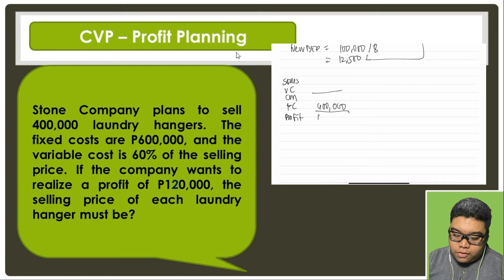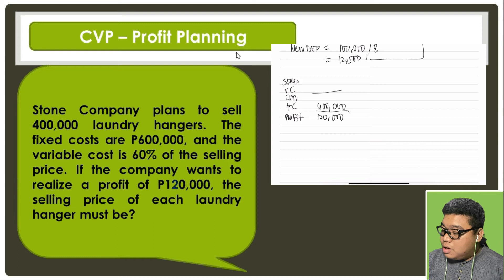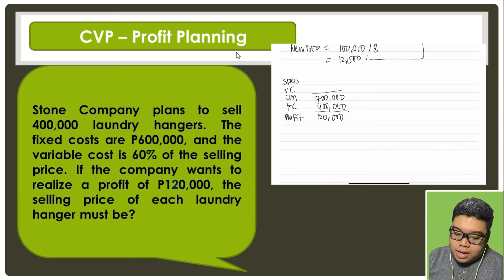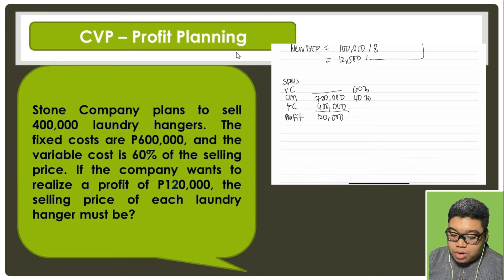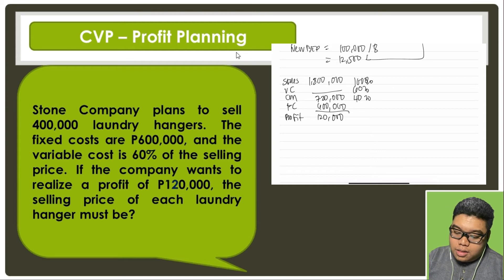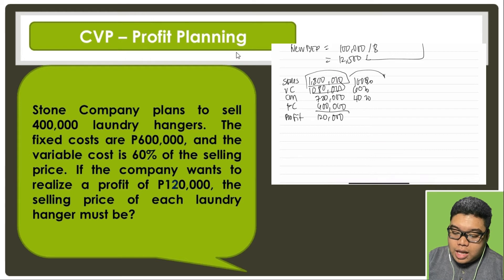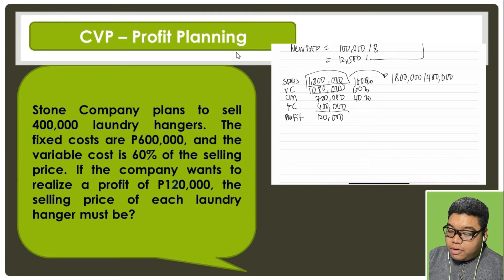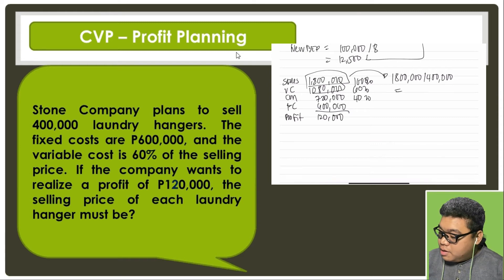They want to realize a profit of 120,000, so the contribution margin must be 720,000. The variable cost ratio is 60%, so the contribution margin ratio is 40%. Now 720,000 divided by 0.4 gives us sales of 1.8 million, with variable cost of 1,080,000. This 1.8 million is applicable for 400,000 laundry hangers, so 1,800,000 divided by 400,000 gives us the selling price per unit.